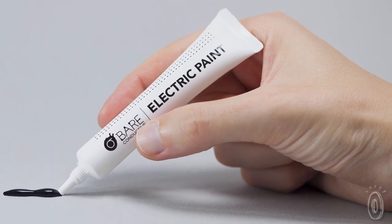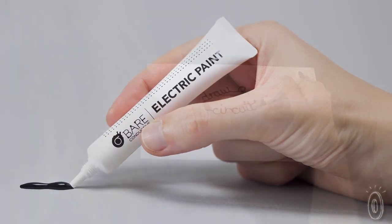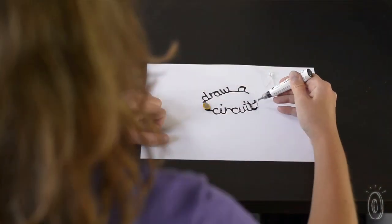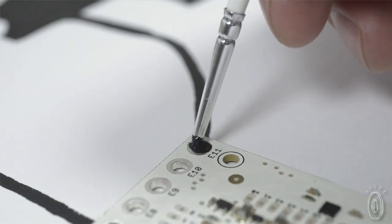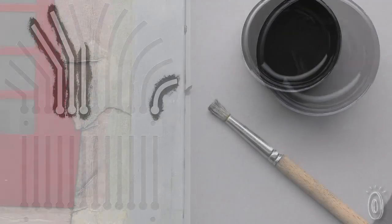Bare Conductive is a London-based studio that's opening up a world of creative potential with technology. Their signature product, Electric Paint, is a paint that conducts electricity. It can be used to create circuits, solder items without heat, or even attach components. That means you can paint a wire on almost anything.